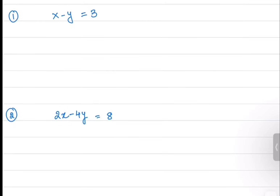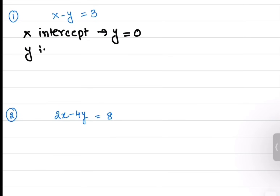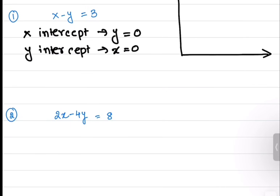We have to graph these linear equations by finding and plotting their intercepts. There are many different ways to graph linear equations, but in this particular lesson we will graph them by finding the intercepts. As discussed earlier, the x intercept is when the value of y is equal to 0, and the y intercept is when the value of x is equal to 0. Wherever the graph intersects the x and y axis are their respective intercepts. So let's put y equals to 0 in the given equation to find the x intercept.